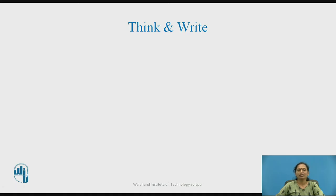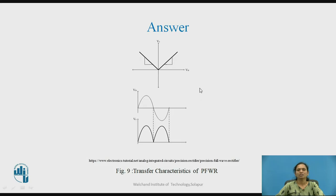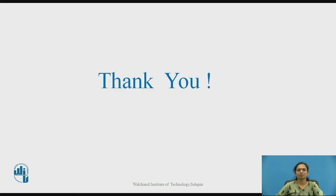Think and sketch the waveforms for the transfer characteristics of the precision full wave rectifier. As we have seen the transfer characteristics for the half wave rectifier, pause this video and sketch the transfer characteristics for the precision full wave rectifier. You will get a linear relationship between input and output voltage for both the positive and negative half cycles. This will be the transfer characteristics for the full wave rectifier circuit. These are the references. Thank you.